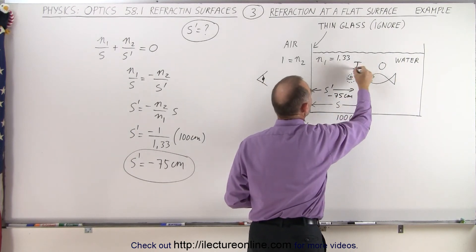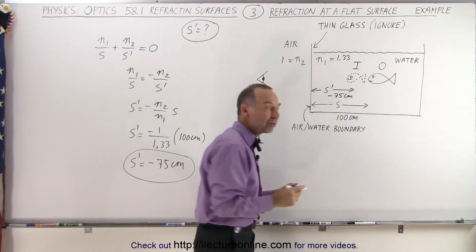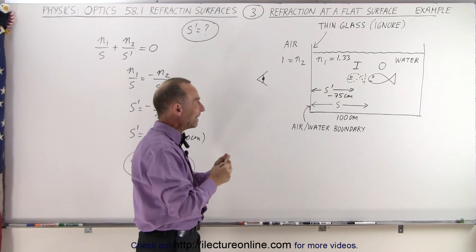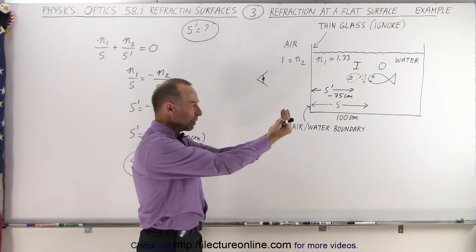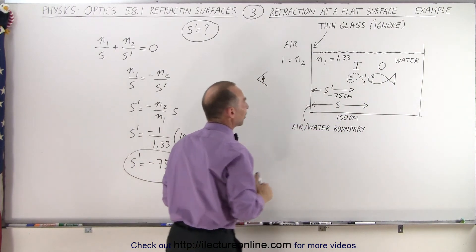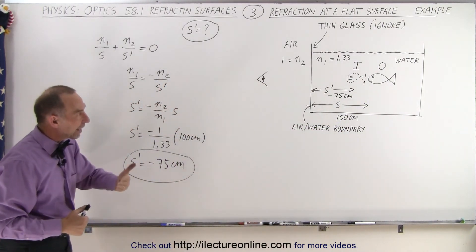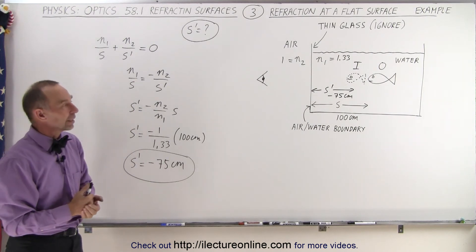So that's what will appear. An image will appear closer than the actual position of the object. So when an observer is looking inside the fish tank, the fish will appear to be closer than it actually is, about three quarters of distance of the actual fish. And so that's how we solve a problem across a flat boundary in an example like this.